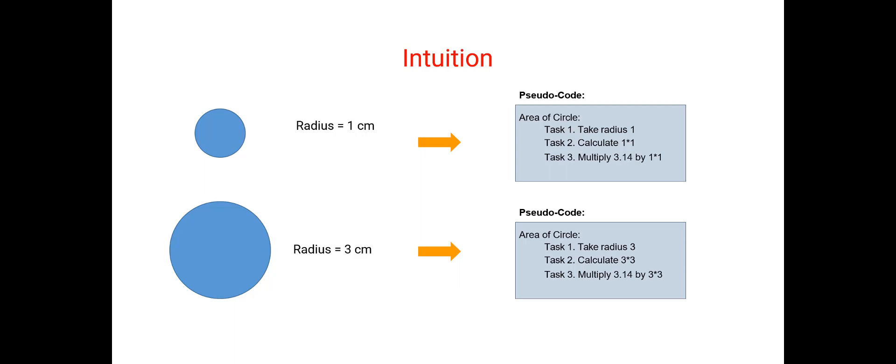So far so good. But what will happen if there are multiple such friends and each of them wants you to calculate the area of a circle with different radiuses? Are you going to write the pseudocode again and again?